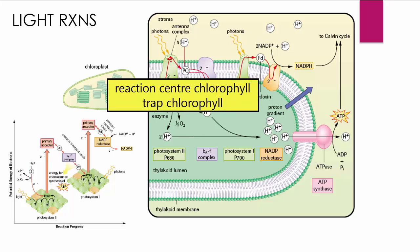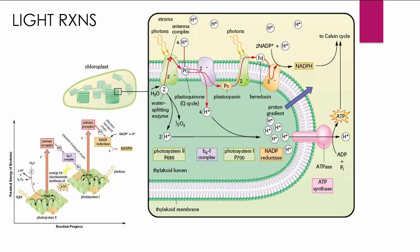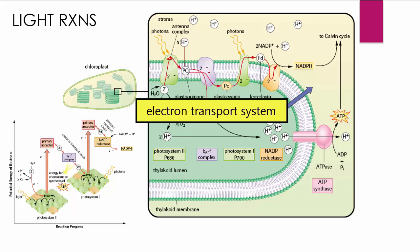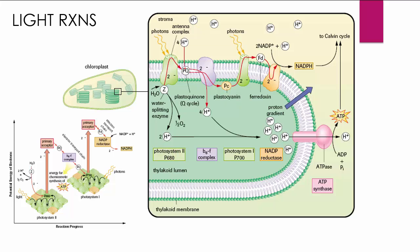That energy is going to bounce from pigment to pigment each time, hitting an antenna pigment and exciting it. And then the energy is going to be released. Eventually, that energy is going to hit a single chlorophyll A molecule. This is the reaction center chlorophyll or the trapped chlorophyll. And when it receives the energy, a couple of its electrons are going to be excited and they're not going to fall right back down to the chlorophyll. They're going to be transferred into an associated electron transport system.